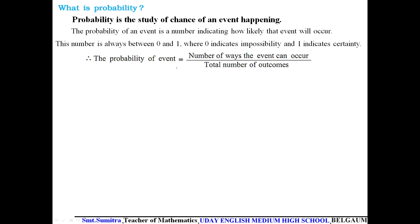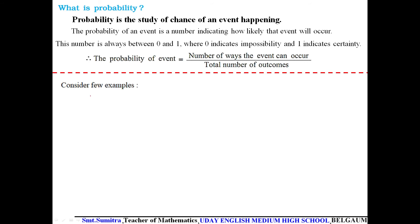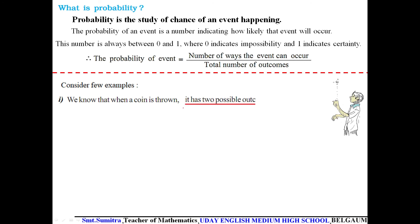The formula to find probability is: Probability of an event = number of ways the event can occur divided by the total number of outcomes. When a coin is thrown, it has two possible outcomes — head or tail — so total outcomes are 2.